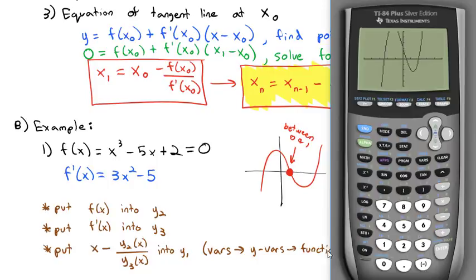So let's take a look at what that means. Y equals, clear. First I'm going to put f(x) into y2. So y2 is x cubed minus 5x plus 2. Then I put the derivative into y3, 3x squared minus 5, enter.